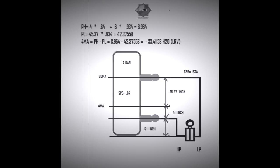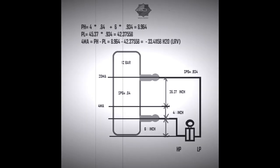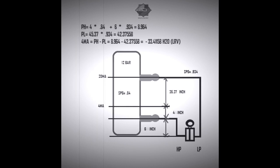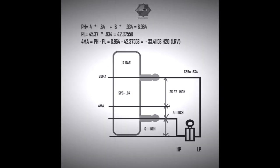Now we find PL from the height of the capillary tube mounted on the LP side. The total capillary tube height from tapping to the transmitter is 45.37 inches multiplied by 0.934, the specific gravity of the liquid-filled capillary, giving us PL = 42.3758. So PH minus PL is 8.964 minus 42.3758, giving us LRV = minus 33.4158 inches of water column.